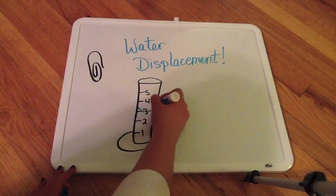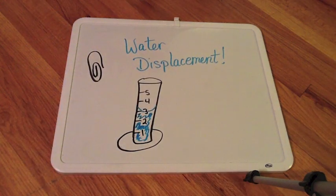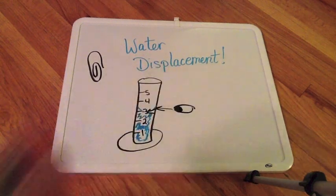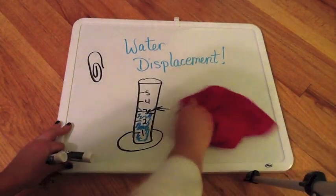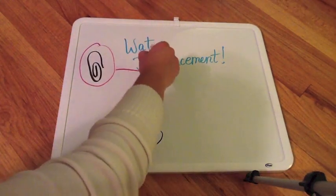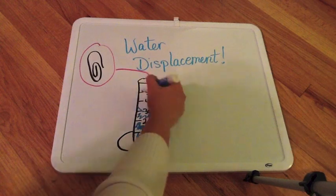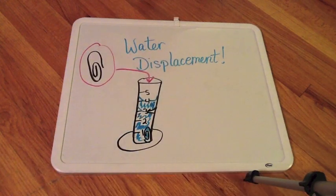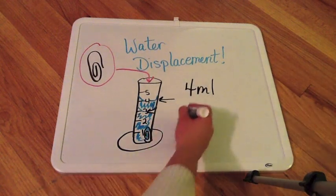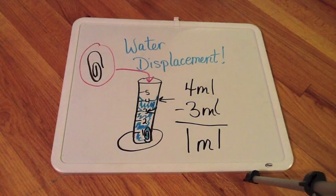Now of course we're going to make sure we are eye level with the bottom of the meniscus, because we want to make sure we are reading accurately that amount of water. So now we are going to take our paper clip and we're going to put it into the water. And when we put it in, we notice that the level of the water goes up to four milliliters. So to figure this out you would take where the water ends up—four milliliters—minus the amount that it started with—three milliliters. And that means the paper clip's volume is one milliliter.